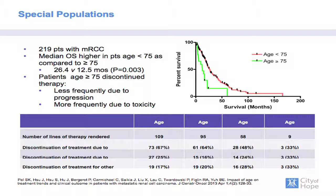In an institutional series of 220 patients with metastatic RCC, patients above age 75 had far worse overall survival than those below 75. Notably, patients aged 75 or older discontinued therapy less frequently due to progression and more frequently due to toxicity, as highlighted in this table.